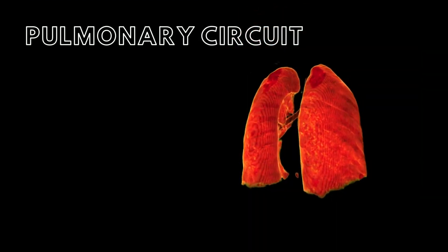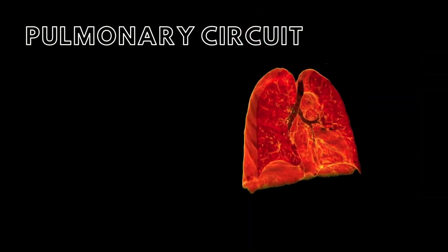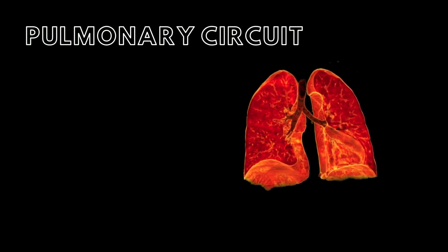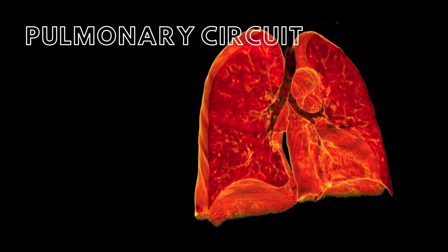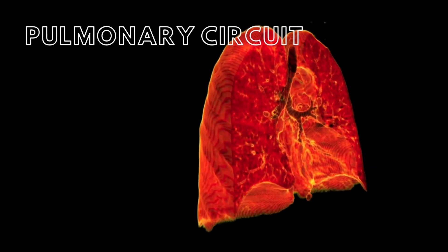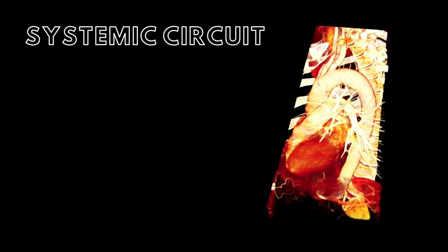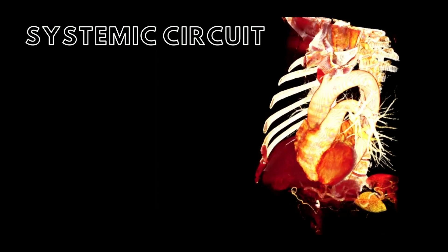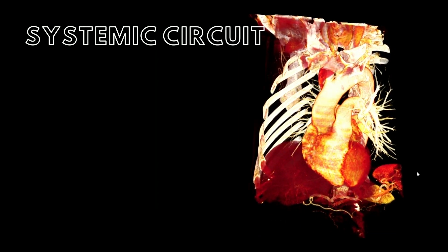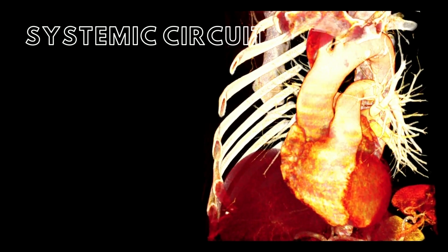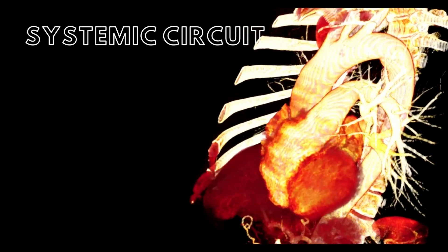The pulmonary circuit carries carbon dioxide-rich blood from the heart to the lungs where gas exchange with blood occurs, and then returns the oxygen-rich blood back to the heart. The systemic circuit carries oxygen-rich blood from the heart to all of the organs of the body and returns the carbon dioxide-rich blood back to the heart.